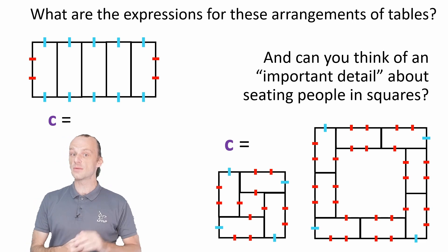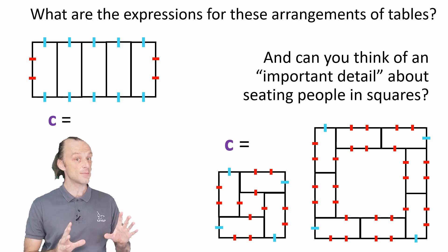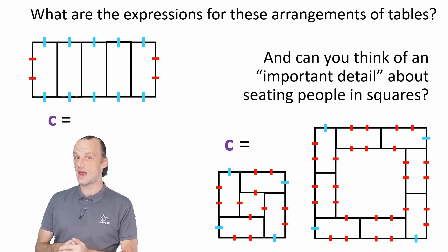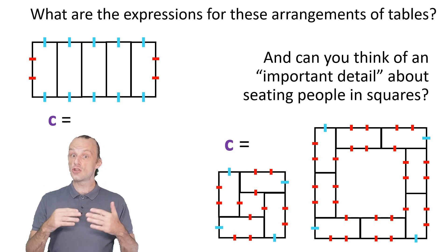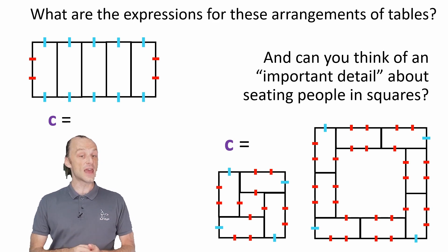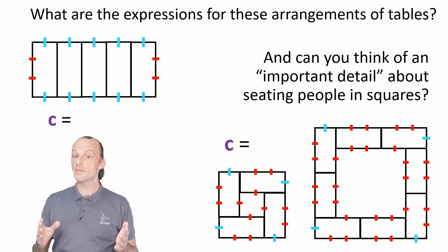Pause if you want some time to think. But above, the arrangement is very similar to the example we used, except that the tables are now put side to side instead of end to end. So we only have two chairs for each table, the two end chairs, and then we have two chairs at each end of the row. So the expression for C this time is 2n plus 4.